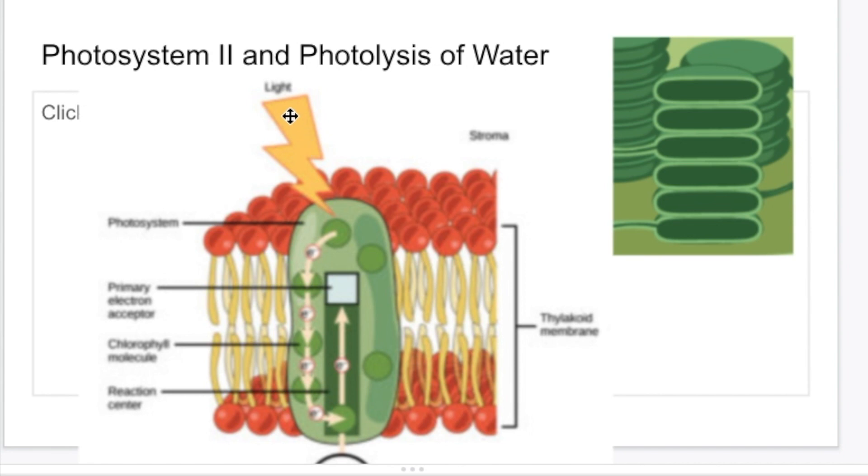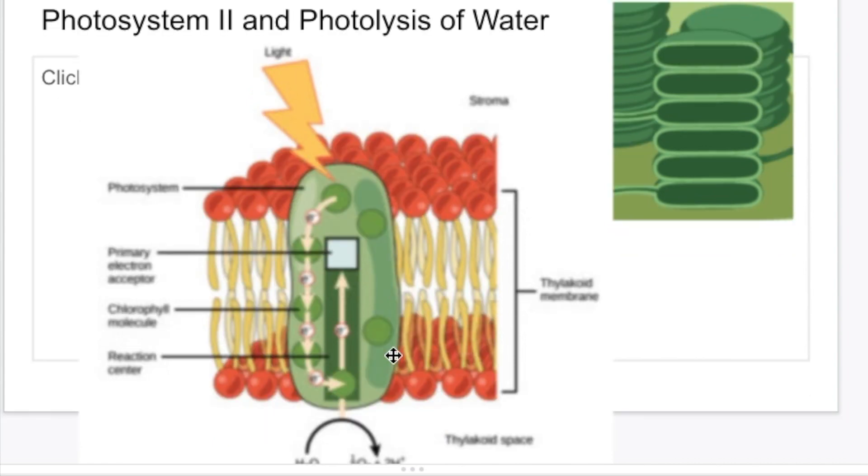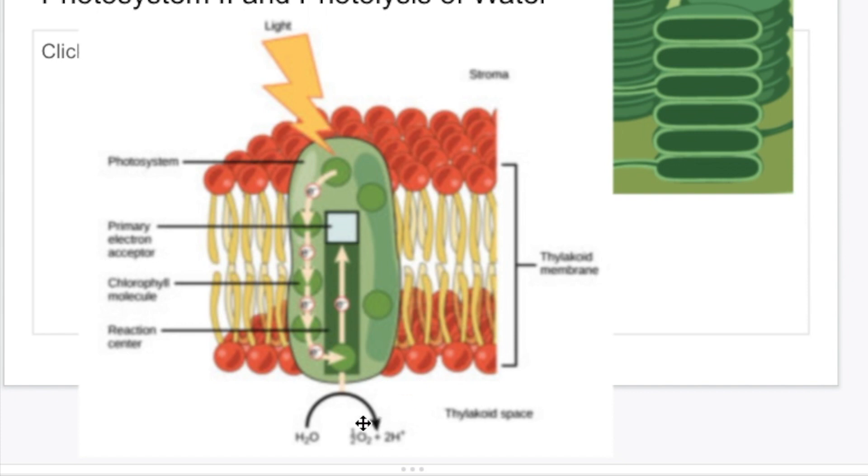Light, photons of light, tiny packets of light, strike chlorophyll molecules in photosystem II, a bunch of chlorophyll molecules that are stacked together in here. Once that light hits it, electrons are excited from the ground state to a higher energy level. Then the chlorophyll molecules become electron deficient. They have a greater tendency to pull electrons toward themselves.